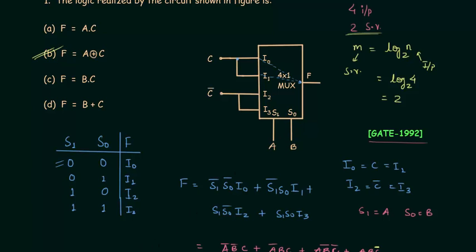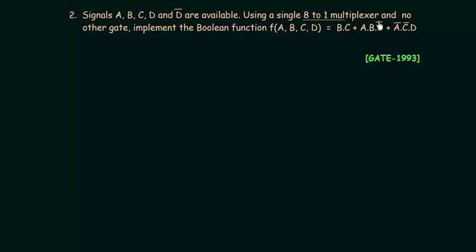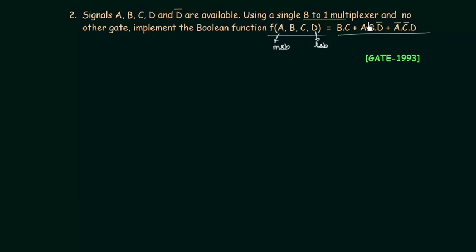Now I will solve the second problem. It is taken from the GATE 1993 exam and is based on an 8-to-1 multiplexer. Signals a, b, c, d and d complement are available. Using a single 8-to-1 multiplexer and no other gate, we need to implement the Boolean function f with variables a, b, c, d where a is the MSB and d is the LSB.